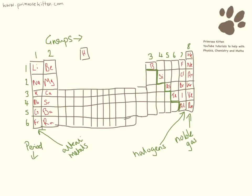So this is a rough sketch of what your periodic table looks like, and here are a few things that you need to know. First of all, there is this squiggly line that I've drawn on the side here. The things on this side are non-metals, and the things on this side are metals. This is really, really important for you to remember.